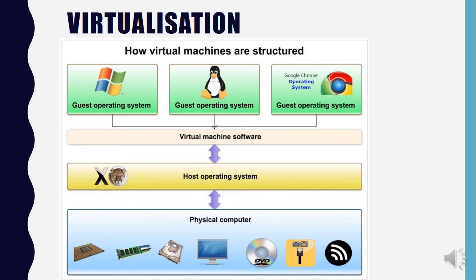This is what a virtual machine looks like. At the bottom you have your physical computer. Above that is your host operating system, such as OSX. Above that, you install virtual machine software. Then you can have a guest operating system — like Windows — running above OSX, or Linux, or Google Chrome.